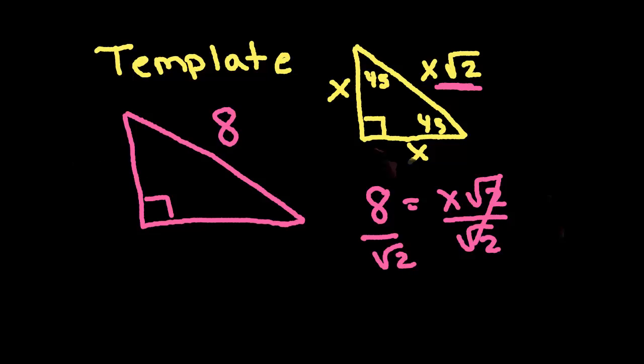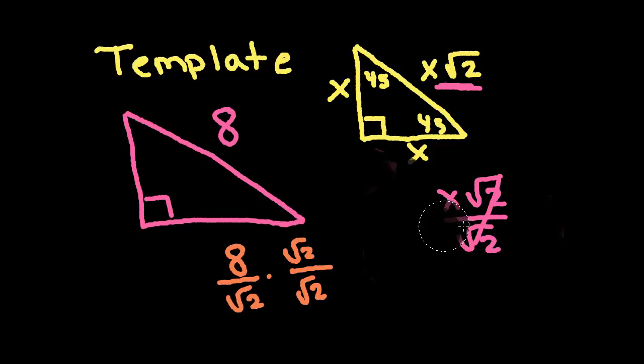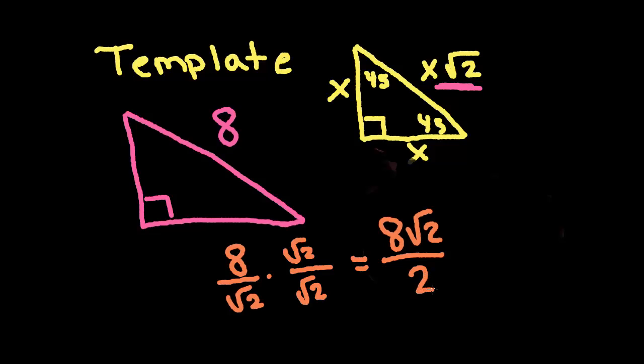But, unfortunately, it's not that simple because that's not how we leave answers. We don't leave radicals in the denominator. So, you have learned how to rationalize a denominator. And, if you've forgotten, you simply take that value that's down here and you multiply top and bottom by that radical. So, square root 2 over square root 2. So, that gives me...